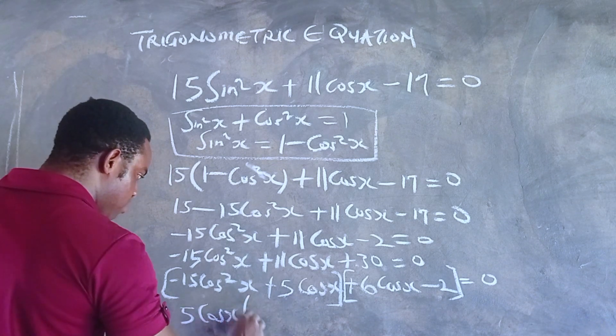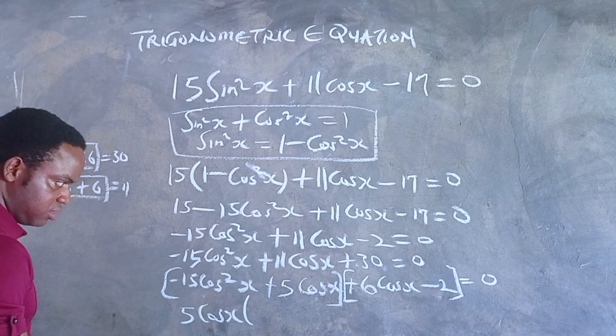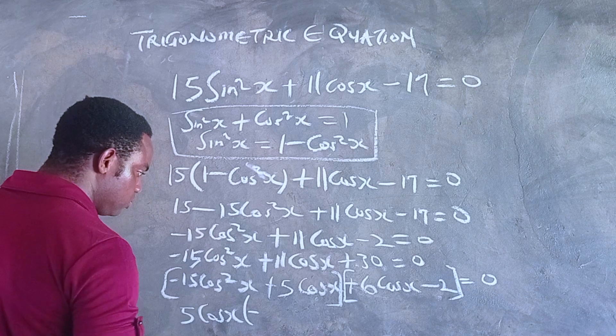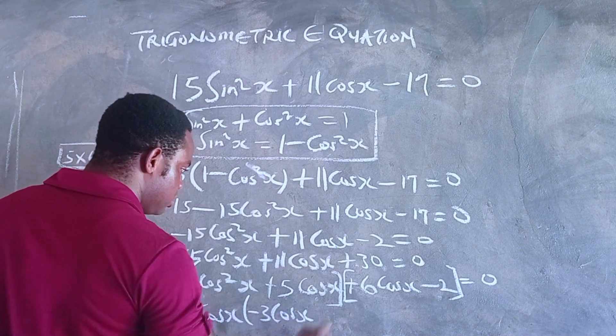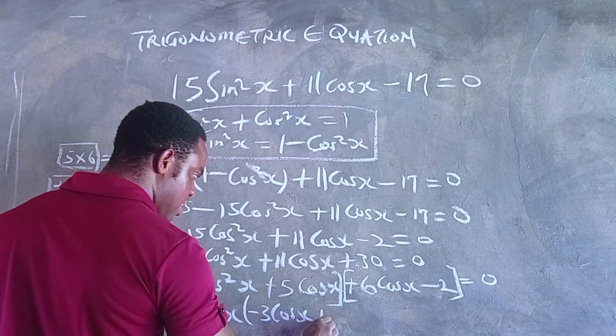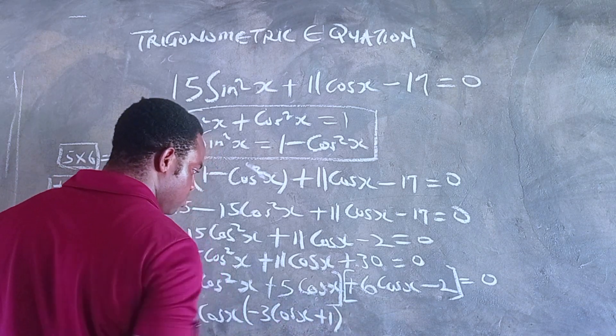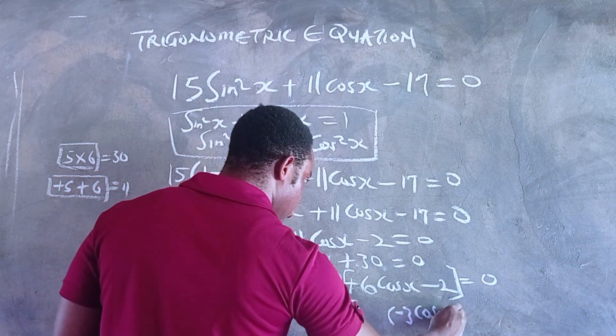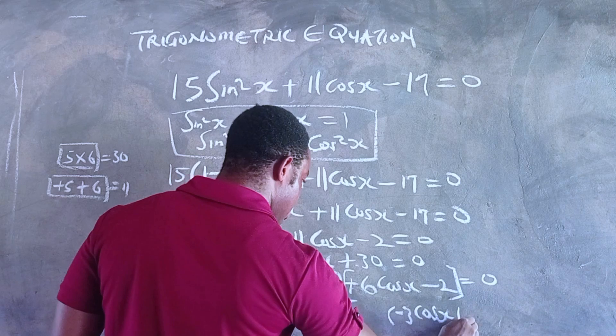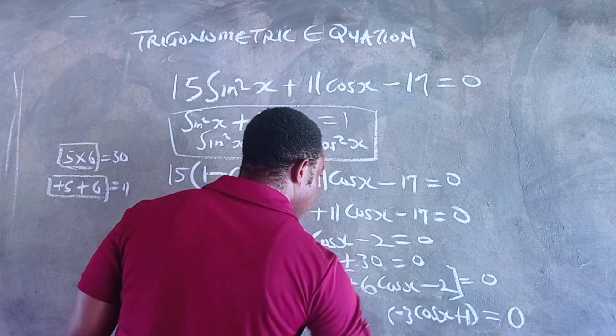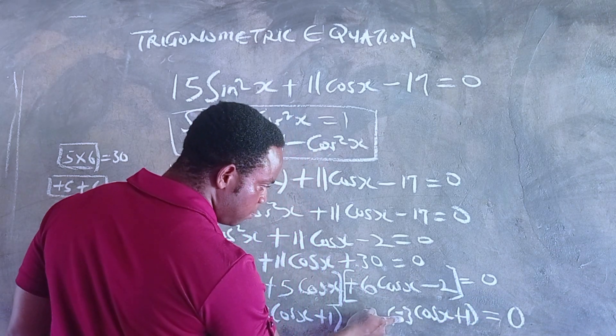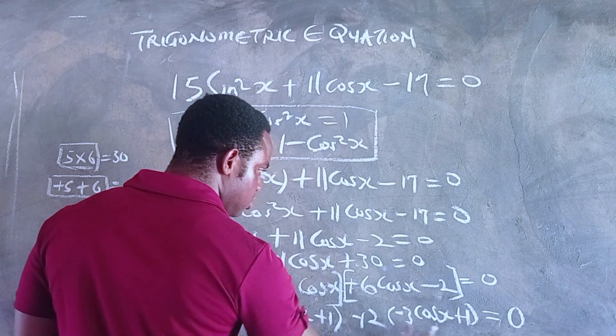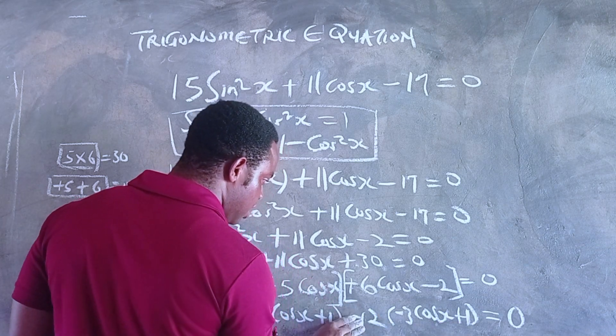For the second part, to get 6cosx we need -2, because -3cosx multiplied by -2 gives +6cosx. So we have (-3cosx + 1) as the repeated bracket factor.